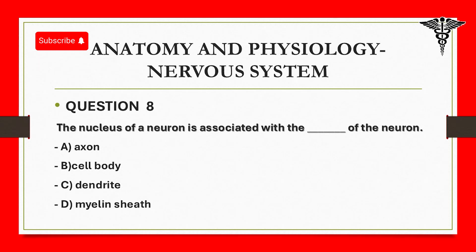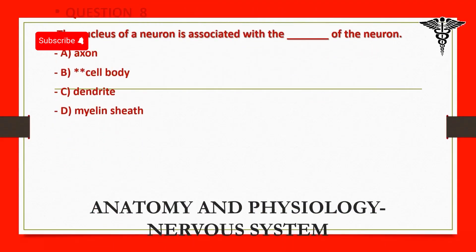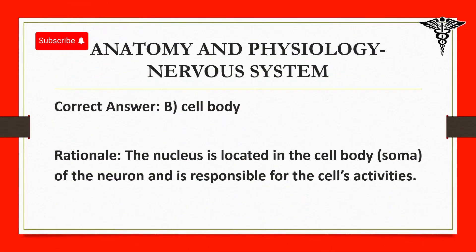Correct answer: B. Cell body. Rationale: The nucleus is located in the cell body (soma) of the neuron and is responsible for the cell's activities.